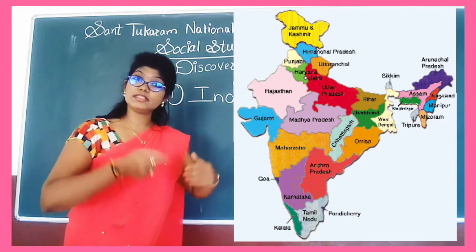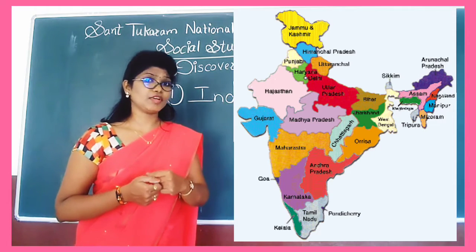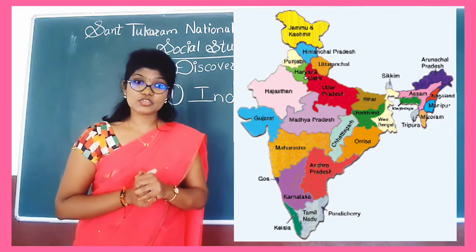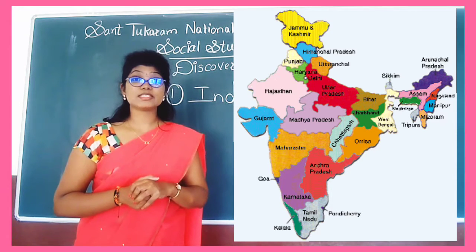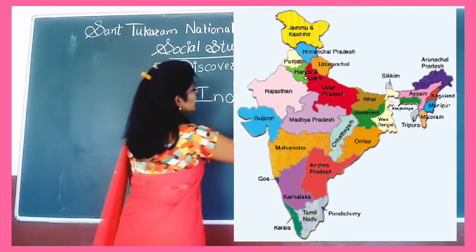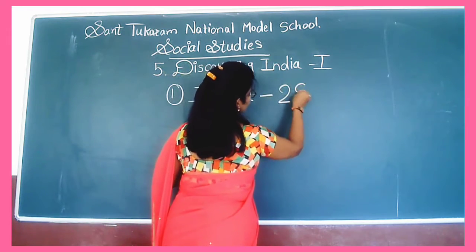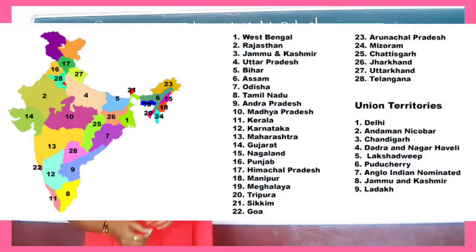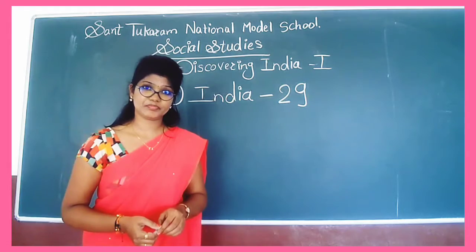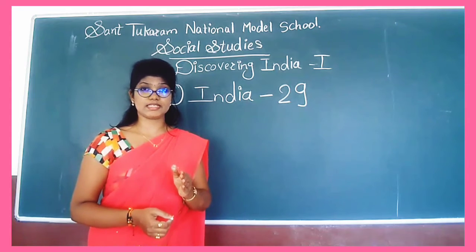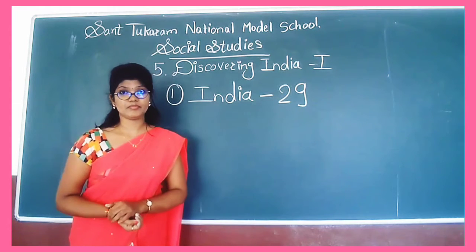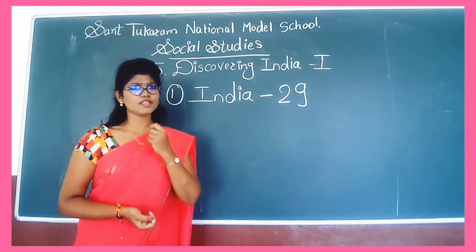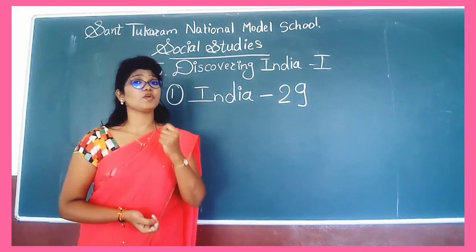Here you can see the different colors. Why are different colors used for specific parts? These colors show the different states. In our India, there are 29 states. All these 29 states live together. We all respect our nation and we all respect the different languages spoken in India.